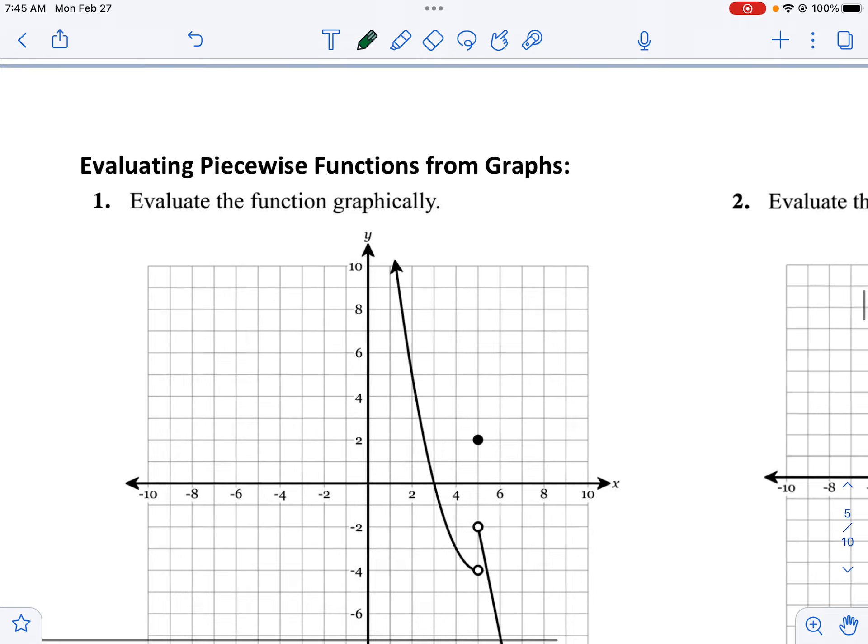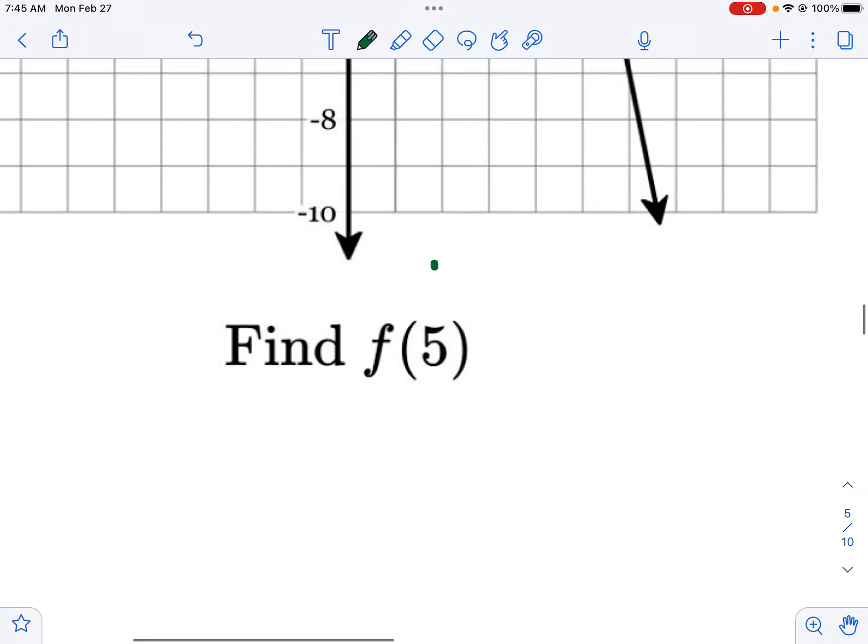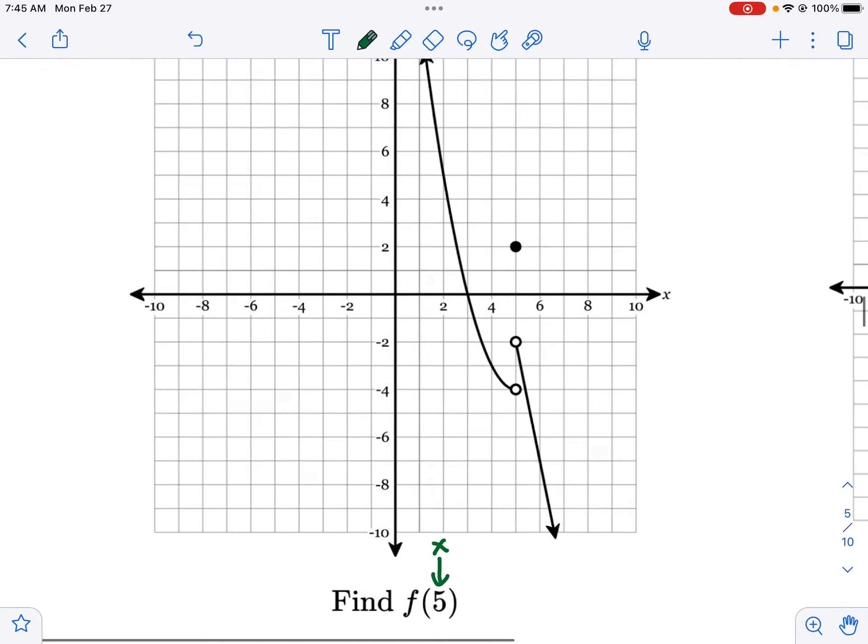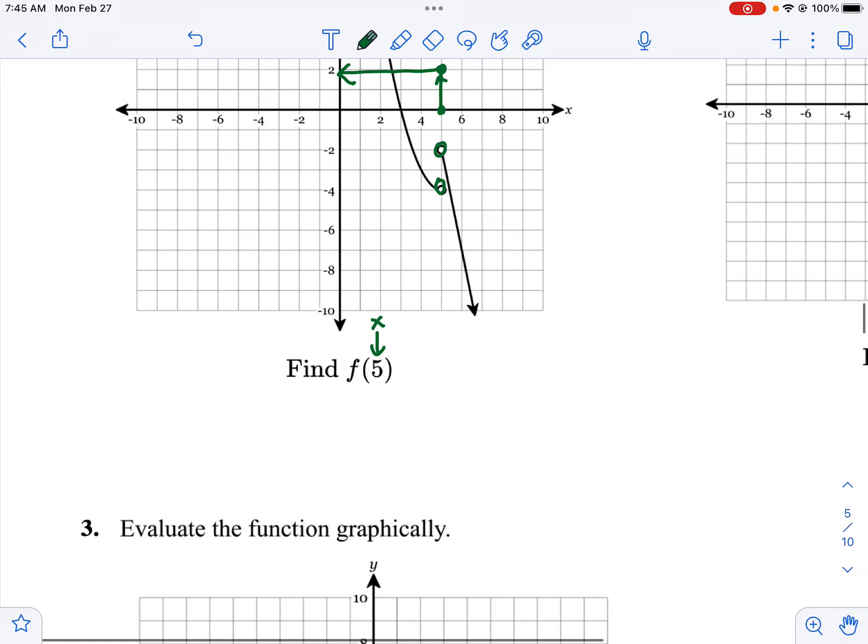So number one, evaluate the function. Okay so this is graphically. And they want f of 5. So this is saying when the x value is 5, when the input is 5, what's the output? So here's 5. And we can see that there's a dot there. And that output, if it's just that dot, would be at 2. Because these are open right here. So it's not those dots. It's just this dot right here. And so that would be 2.